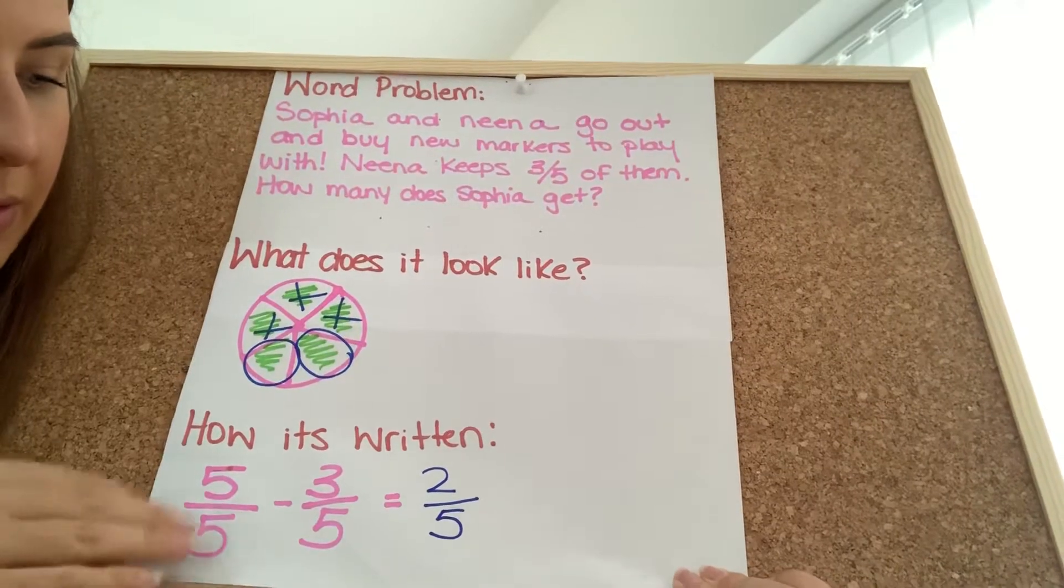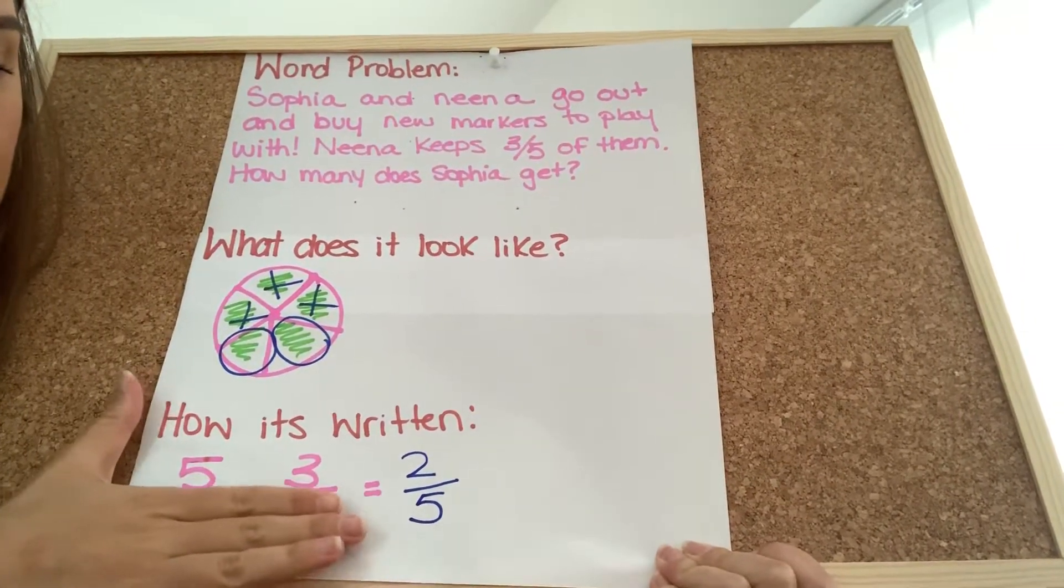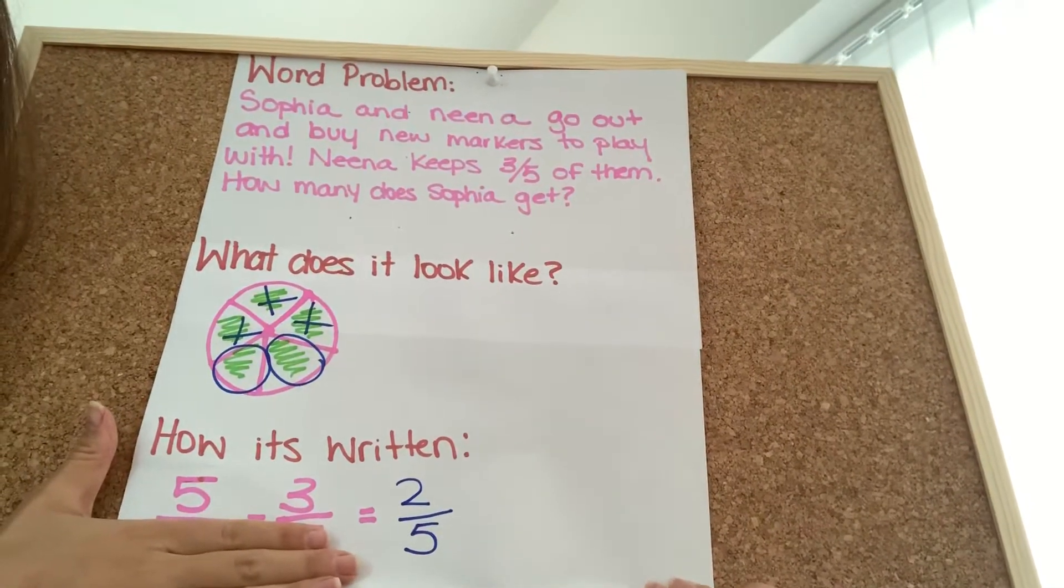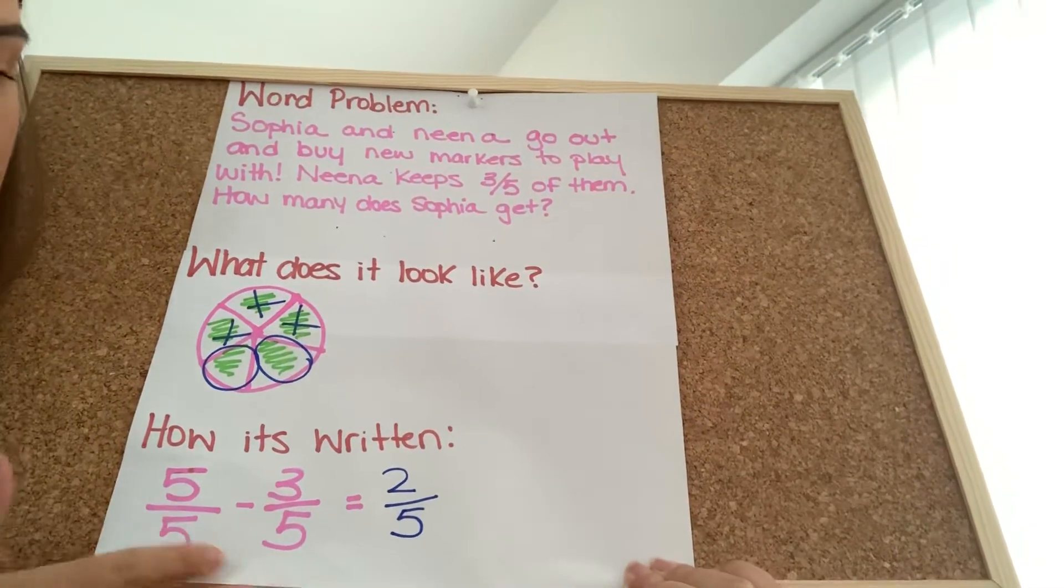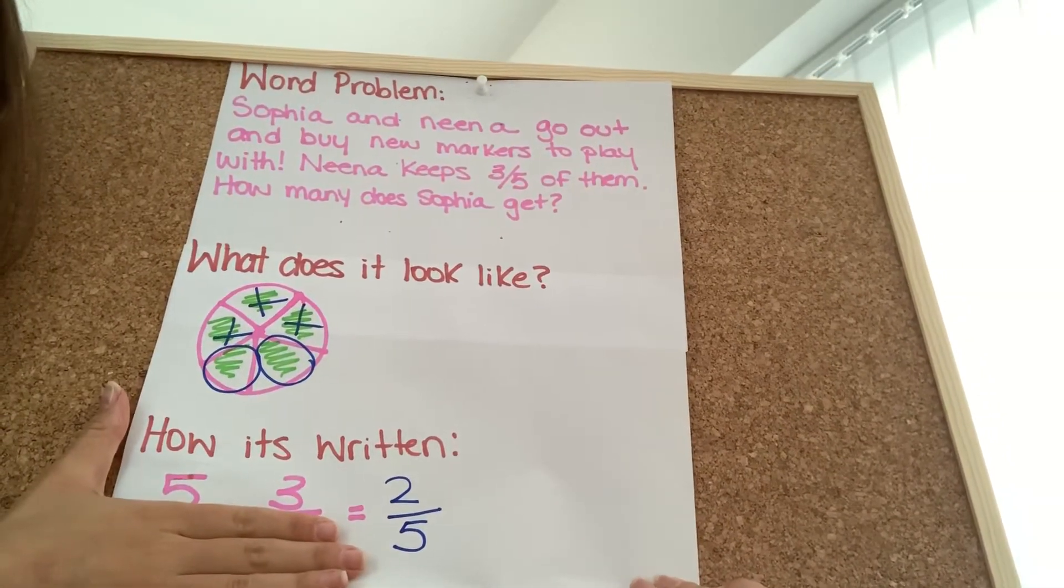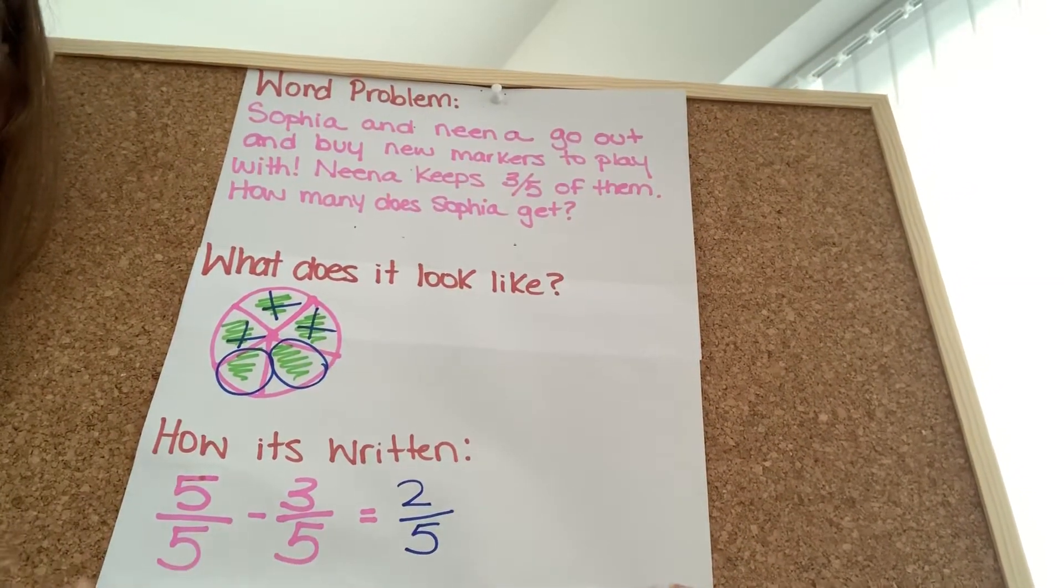So, like fractions with like denominators are a little bit easier because you're only focusing on the top, okay? So, it's the exact same thing. If you had five minus three, you would know it would be two, okay? And you keep the same denominator.